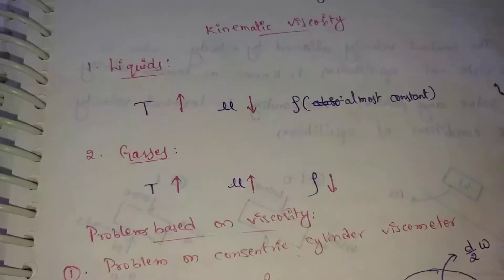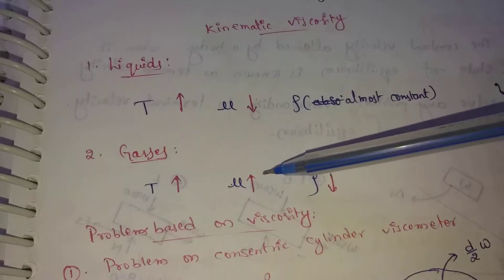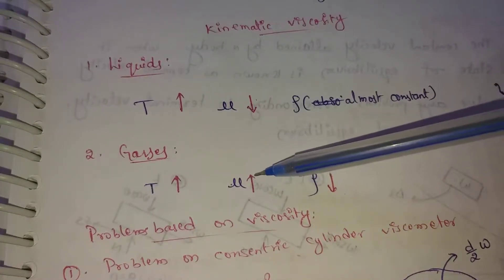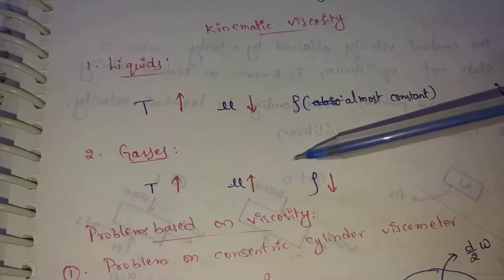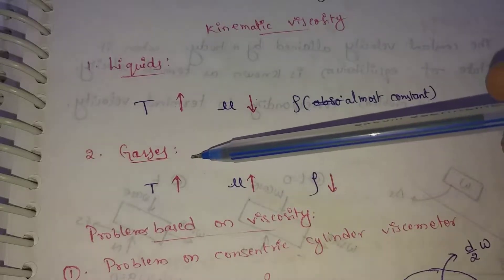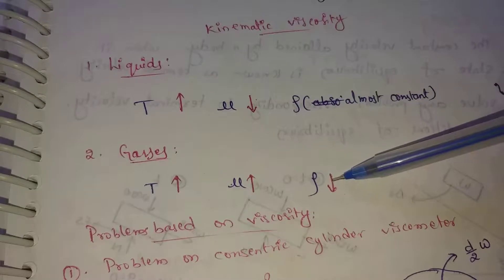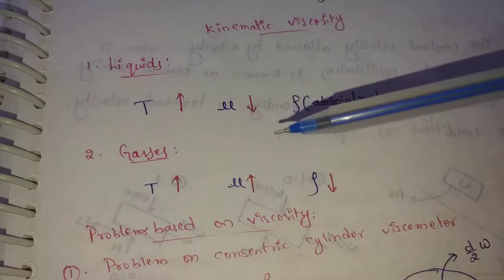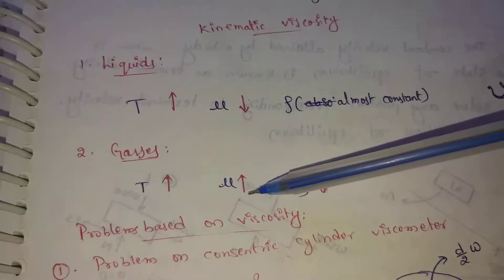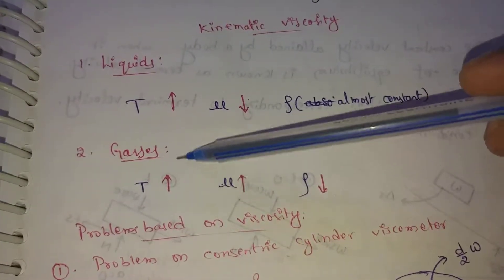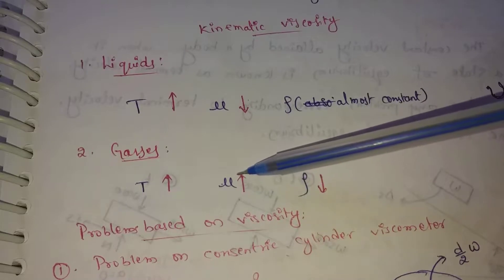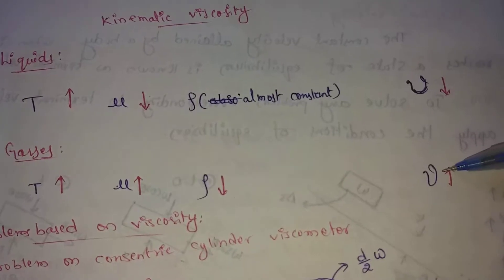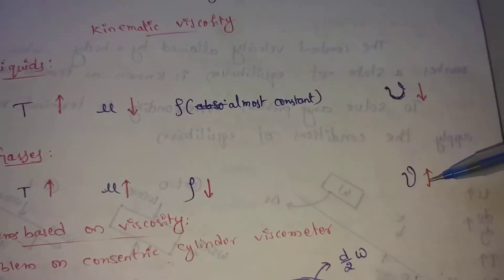For gases, kinematic viscosity can increase. As temperature increases for gases, dynamic viscosity automatically increases. But here, density for gases also decreases with temperature. So automatically, kinematic viscosity for gases increases with temperature.